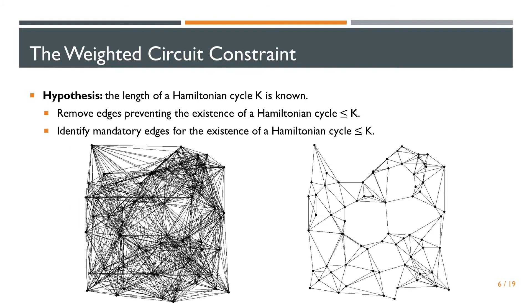To tackle the issue of slow convergence, the CP proposes to filter some value of some variables that are known to be inconsistent. In practice, it leads to a huge improvement. Now, I'll give you a short introduction to the filtering algorithms of the weighted circuit constraints, that is the constraint used for modeling the TSP in CP. Take a graph, like the left one on the slide. Make the hypothesis that we know the length K of a Hamiltonian cycle in the graph. K is an upper bound for the TSP. Now, with some algorithms that I will not explain here, we can remove edges preventing the existence of a Hamiltonian cycle lower or equal than K.